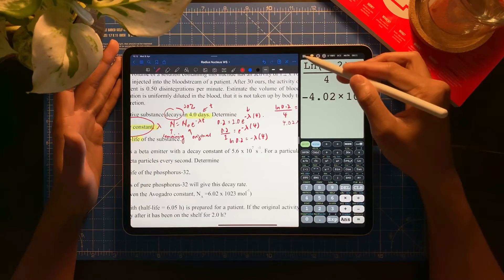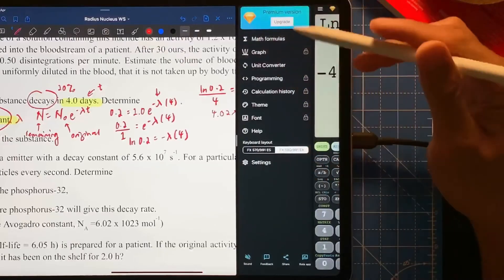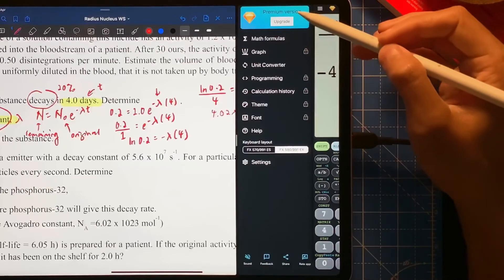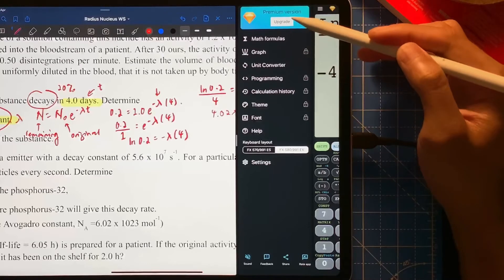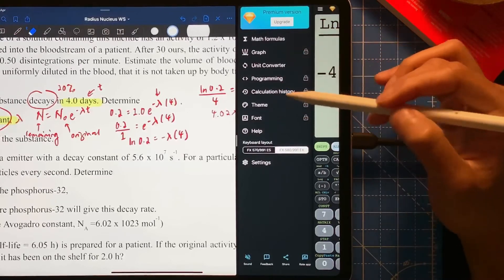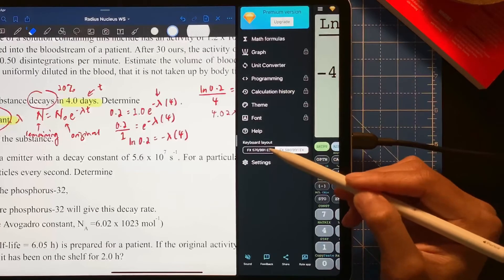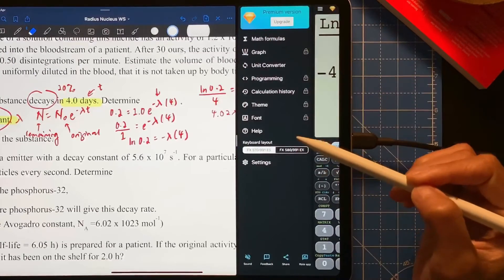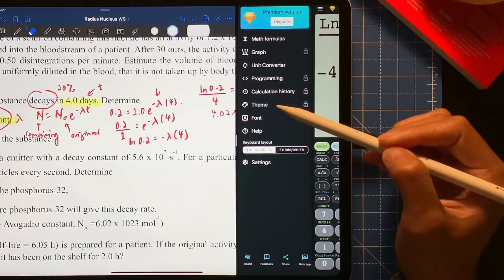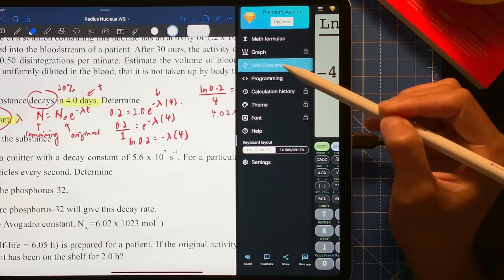And then there's a lot of customization that you can do to it. If you want to upgrade to the premium version, which actually I might do that, because it's such a great calculator, then you can change the layout here, which layout you like. And then you can change the font, you can change the theme.